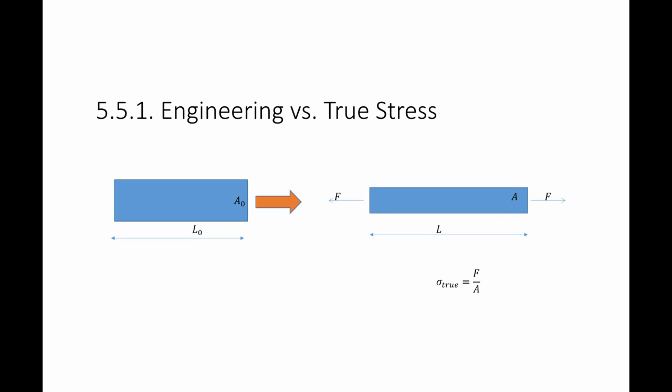In general, if I have a specimen with dimensions length L₀ and area A₀, and then I apply a force on that specimen, the area will decrease from A₀ to A and the length will increase from L₀ to L. The actual true stress applied on this material is equal to the force divided by the actual area.